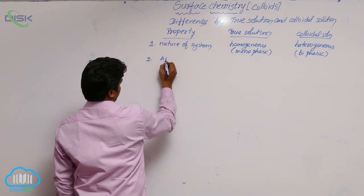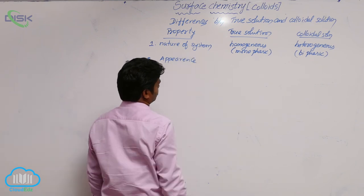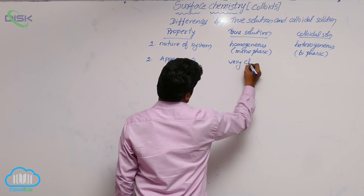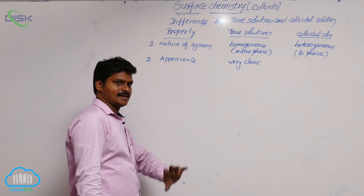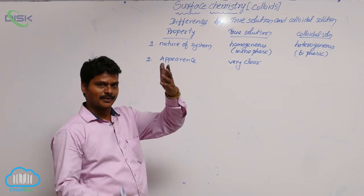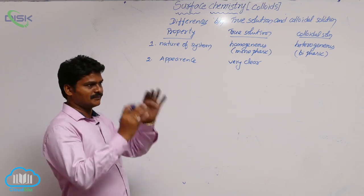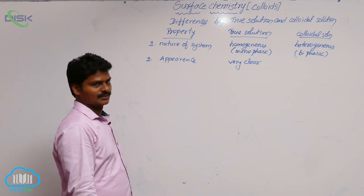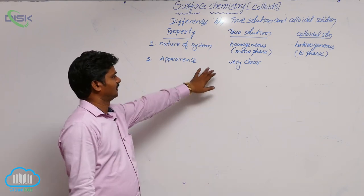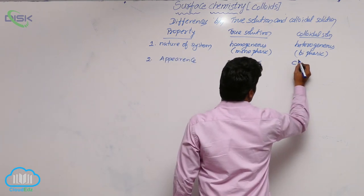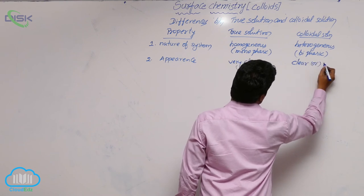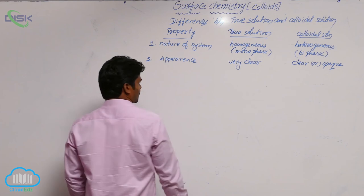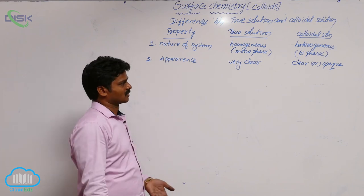Second property — appearance: a true solution is very clear, you can see images through it with no cloudiness. A colloidal solution may be clear or opaque — some colloidal solutions are clear but others are cloudy.